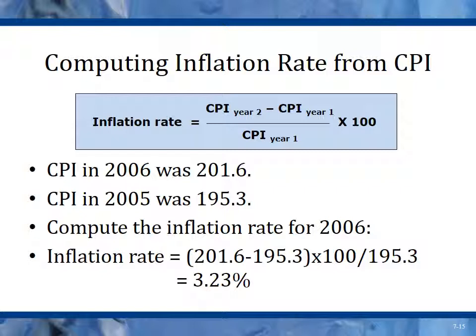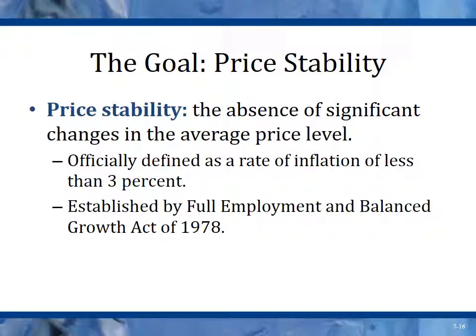Price stability is the goal — a stable level of prices meaning we are increasing less than three percent per year. This was established by the Full Employment and Balanced Growth Act of 1978: to keep employment as close to full as possible and keep inflation below three percent. This is also the charge of the Federal Reserve and the Federal Reserve chairman, which they try to achieve by manipulating interest rates and the money supply.